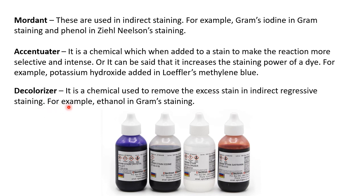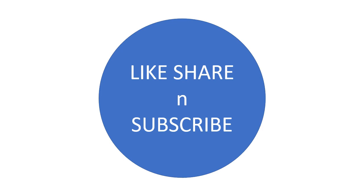A decolorizer is a chemical used to remove excess stain in indirect or differential staining. The best example is ethanol used in Gram staining. It determines whether a culture is Gram positive or Gram negative: if the crystal violet–iodine complex is washed off by the decolorizer, the culture takes up safranin and is concluded to be Gram negative. If the complex remains after decolorization, the culture stays violet and is Gram positive. Do like, share, and subscribe to the channel — thank you.